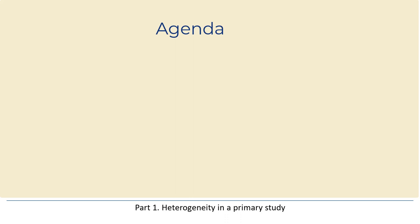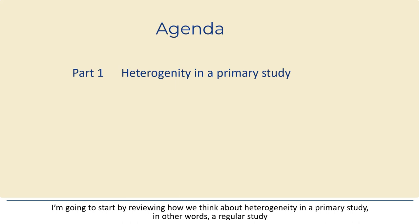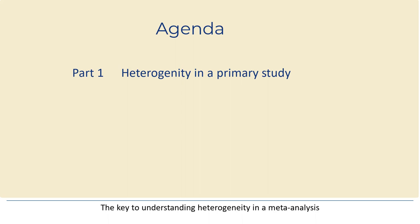Part one: heterogeneity in a primary study. I'm going to start by reviewing how we think about heterogeneity in a primary study — in other words, a regular study — and then we'll turn to meta-analysis. The key to understanding heterogeneity in a meta-analysis is to keep in mind that it's pretty much the same as in a primary study.